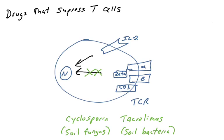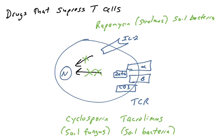The next compound inhibits signaling from the IL-2 receptor. IL-2 is a cytokine whose main function is to signal in a paracrine or autocrine manner from T-cells — either to themselves or to neighboring T-cells — and it induces proliferation of T-cells. So if we inhibit the signal from the IL-2 receptor, we inhibit T-cell proliferation. There's a compound called rapamycin, also known as sirolimus, which is isolated from a soil bacterium and inhibits signaling from the IL-2 receptor, thereby inhibiting the proliferation of T-cells that occurs during T-cell activation.